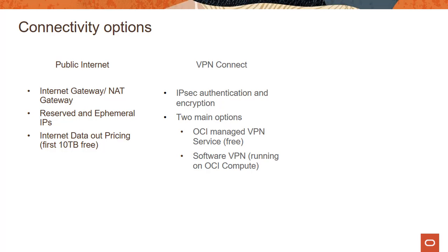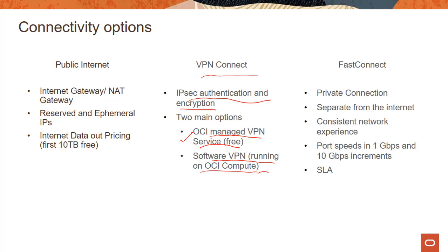There are two more options which we didn't discuss in a lot of detail in the previous module on virtual cloud network — VPN Connect and Fast Connect. VPN Connect is an option where you connect two different sites using the IPsec protocol. There are two main options: the first is an OCI managed VPN service, which is offered for free — you don't pay for anything except underlying resources. The second option is you can run your own software VPN, for example installing software like LibreSwan on a Linux VM.